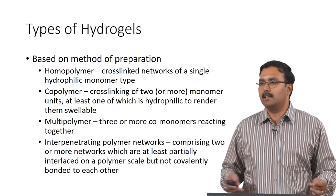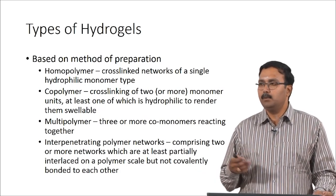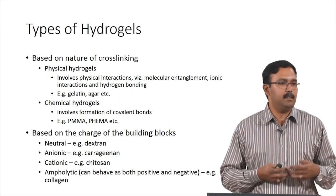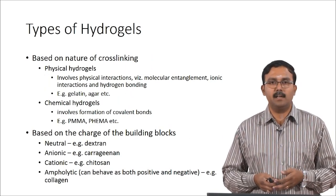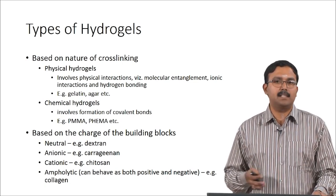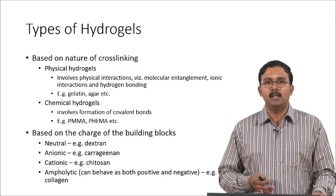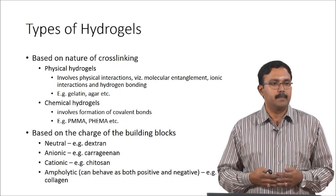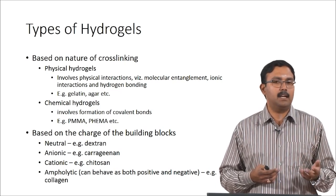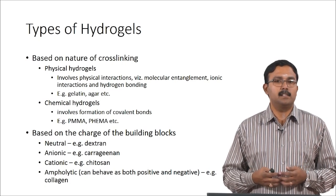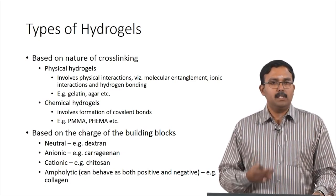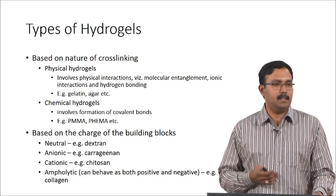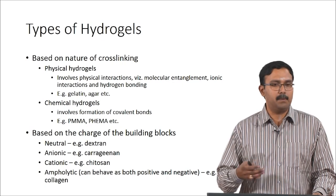There are also things like double network hydrogels and many other types — people have used these to alter the mechanical and degradation properties of hydrogels. Based on the nature of crosslinking, hydrogels can be classified as physical hydrogels and chemical hydrogels. Physical hydrogels involve physical interactions like molecular entanglement, ionic interactions, or hydrogen bonding. Chemical hydrogels have crosslinkers which form covalent bonds. Examples of physical hydrogels include gelatin and agar, while chemical hydrogels include PMMA and polyHEMA. Based on the charge of the building block, hydrogels can also be classified as neutral, anionic, cationic, or ampholytic.